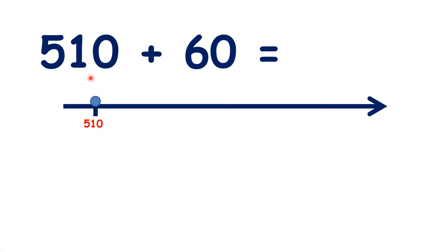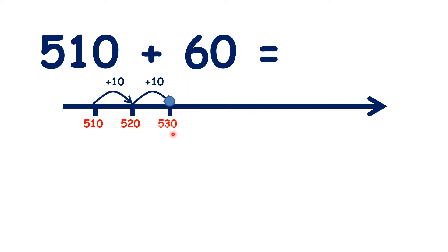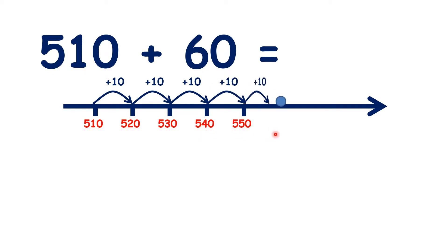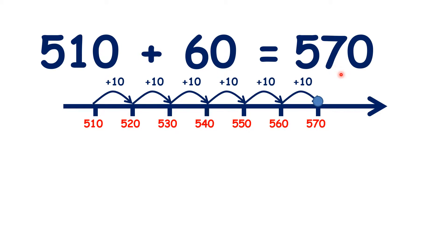So here we have 510 plus 60. Now we're used to solving questions like this on a number line by counting up in tens. So because we're adding six tens, we can count 520, 530, 540, 550, 560, 570. Notice that because we're adding 60, we've added 10 six times to get our answer 570.